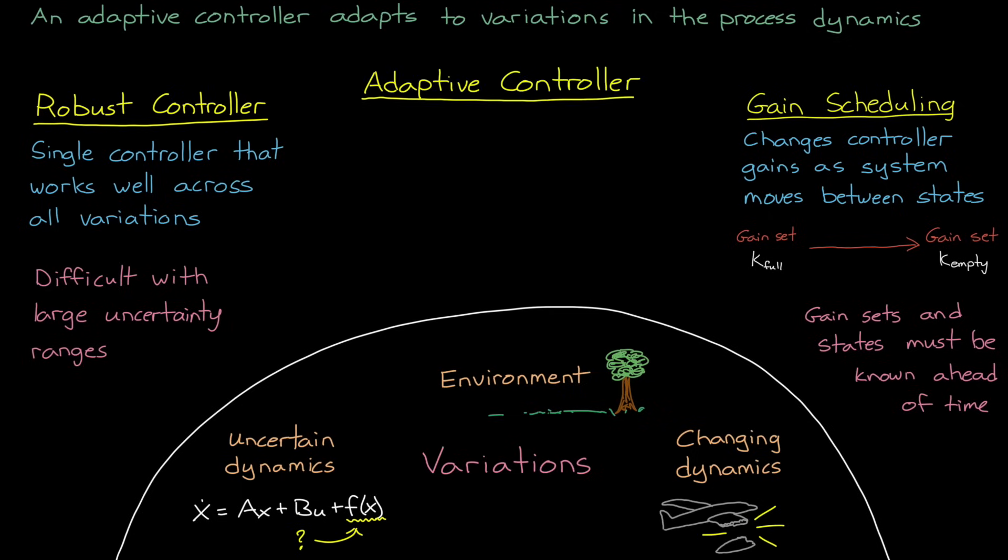So in the cases where variations are large and uncertain, it makes sense to do something else. With adaptive control, the gains or parameters of the controller are not completely determined ahead of time. Instead, a learning mechanism is built into the controller that is constantly tweaking and optimizing the parameters.